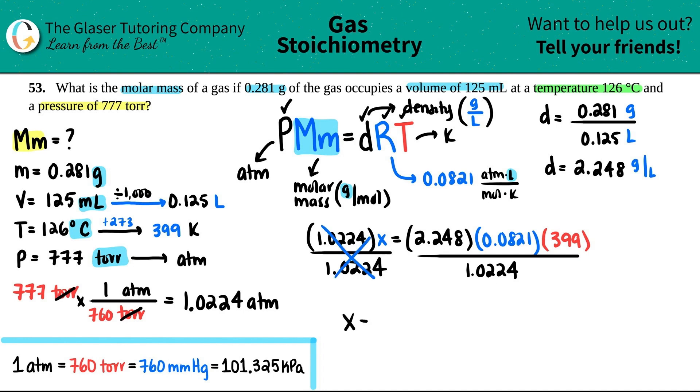Okay. So 2.248 times 0.0821 times 399 divided by 1.0224. And now we have three sig figs that we started with. So 72.0. And then remember, molar mass is always grams per mole. So that is the final answer. So this molar mass of whatever the gas is, is 72 grams per mole.